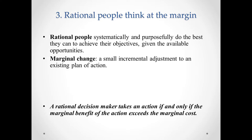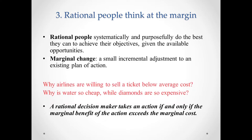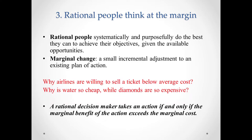The marginal benefit depends on how many units a person already has. Water is essential, but the marginal benefit of an extra cup is small because water is plentiful. By contrast, no one needs diamonds to survive, but because diamonds are so rare, people consider the marginal benefit of an extra diamond to be large. This is how the concept of marginal benefit and marginal cost explains why airlines sell tickets below average cost and why water is cheap while diamonds are expensive.